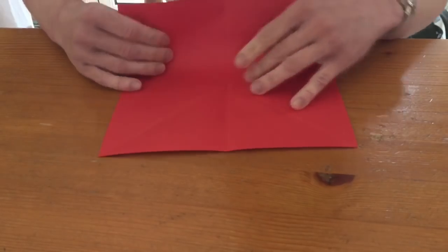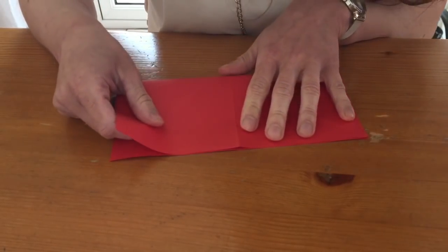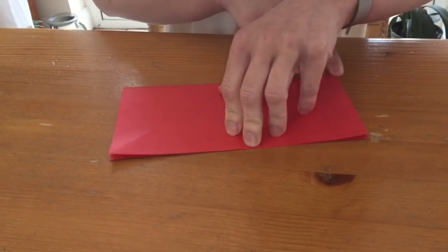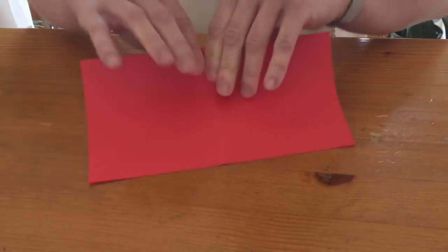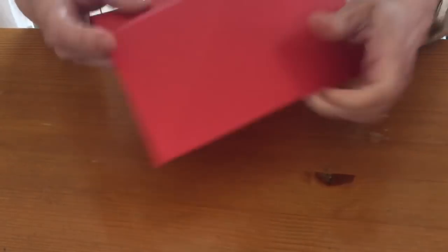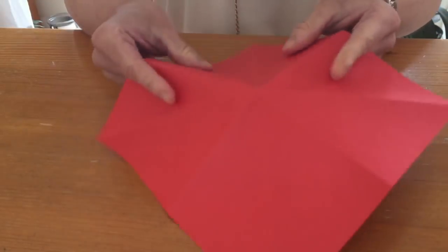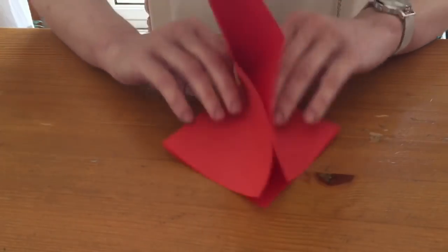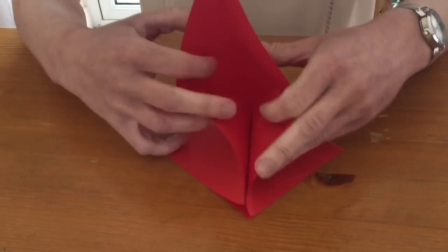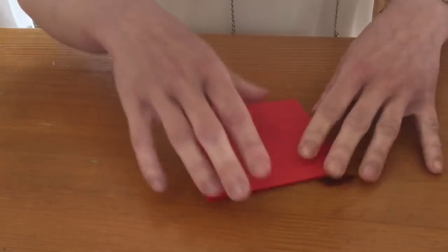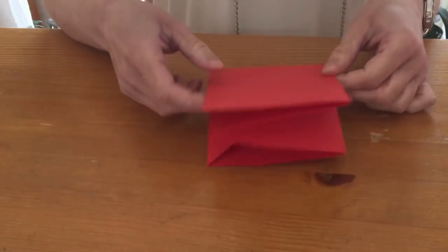Open it up and fold it the opposite way, just like that. Now what you want to do is you want to try and get into a diamond shape, just fold it down like that. And there you have a diamond shape.